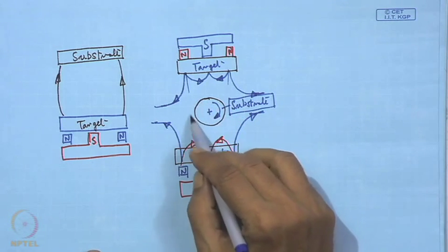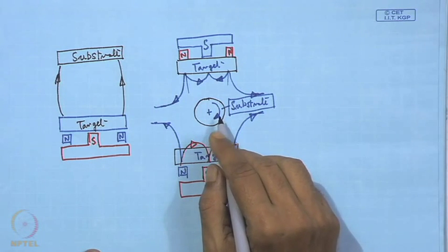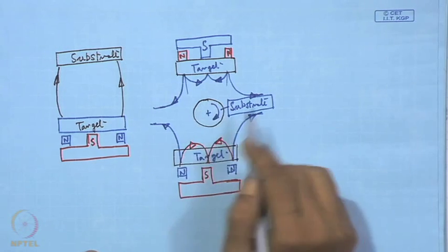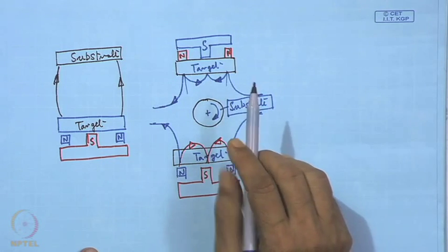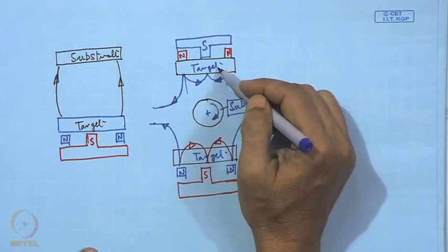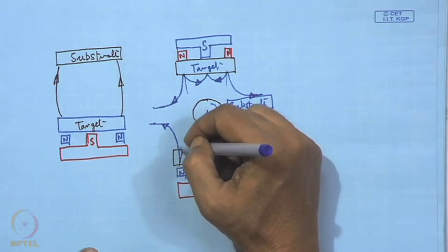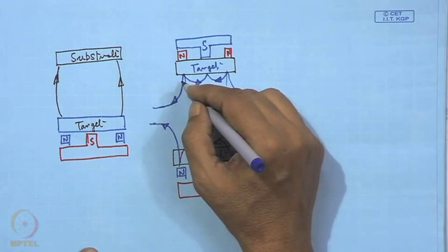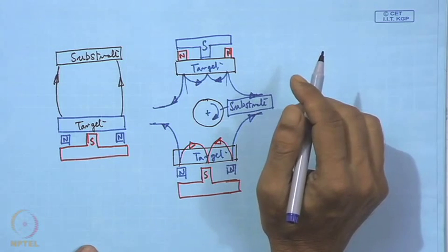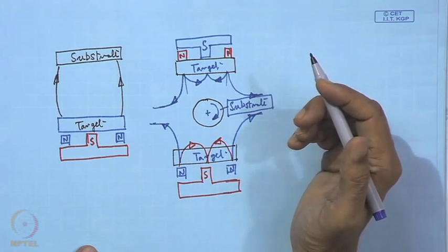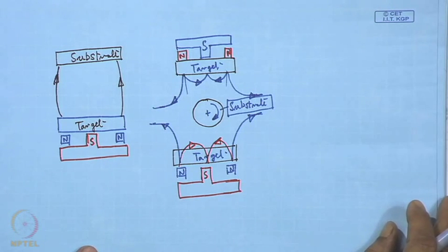This mirror field arrangement can be useful where a porous coating rather than a dense coating is required. Since the north poles face each other, the field lines repel and there is no densification of the plasma. This is called the mirror field and is applicable where low density or even porosity in the coating is desired.